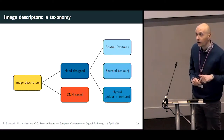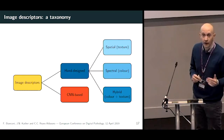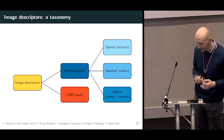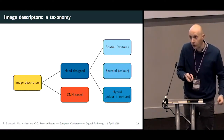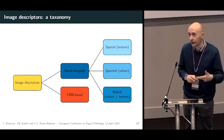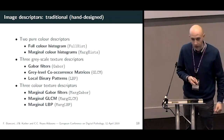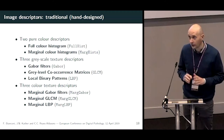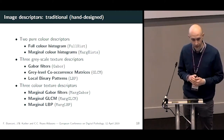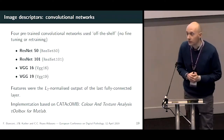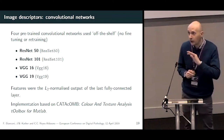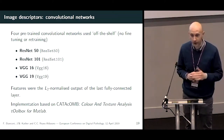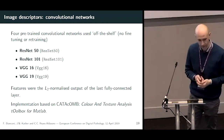Regarding image descriptors, we have two main families: traditional hand-designed descriptors and those based on deep learning convolutional neural networks. The traditional ones can be based on color alone, texture alone, or a combination of both. We considered eight methods, including color histograms, Gabor filters, co-occurrence matrices, and local binary patterns. For CNN-based methods, we used four pre-trained networks in an off-the-shelf manner without any retraining or fine-tuning.